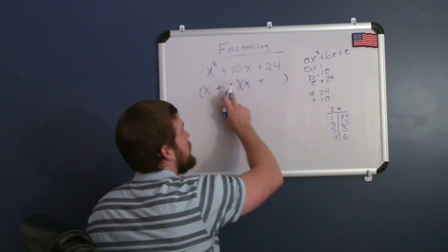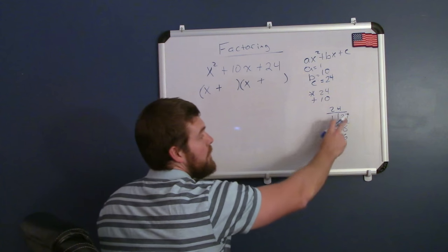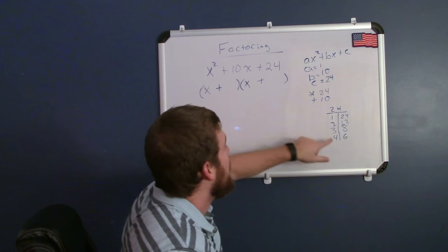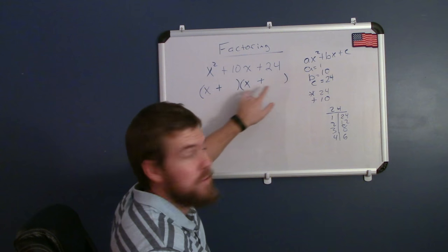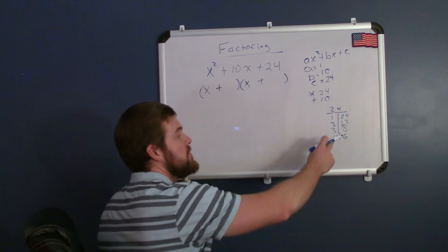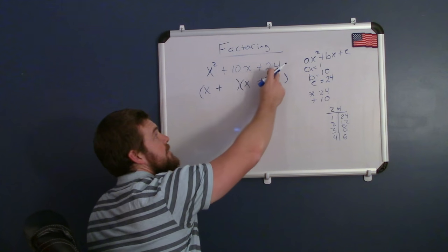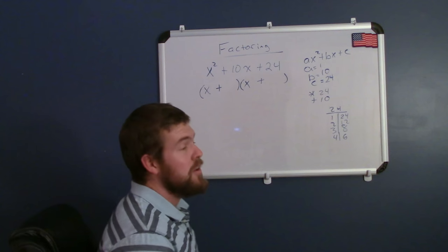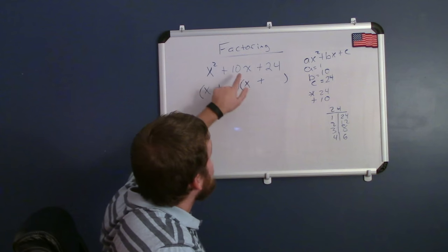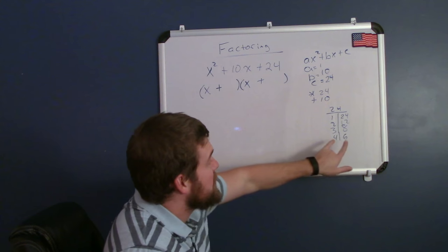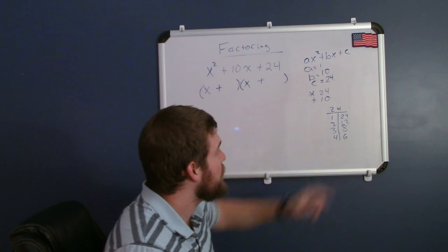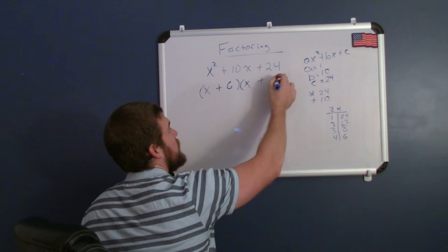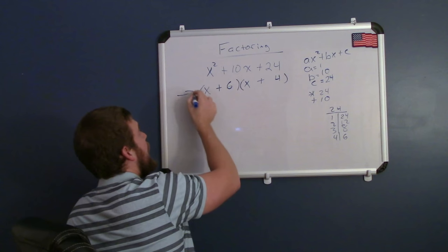So these are all my options. They come in pairs: 1 and 24 would have to be placed here, 2 and 12 together, 3 and 8 together, and 4 and 6 together in these two spots. The reason why we're choosing those is when we multiply it back out, that's going to give us that positive 24. The x times x gives us the x squared. So now we want to see which two together add to be 10. Well that comes out to be 4 and 6. These two numbers add together to be 10. So we have x plus 6 here and x plus 4, and there we have our answer.